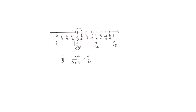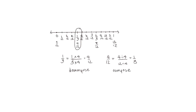Going the opposite direction, we can start with four twelfths and compose into larger units by dividing the numerator and the denominator by four, and we're back to one third. So we can decompose by multiplying the numerator and denominator by the same factor, or we can compose, making larger units, by dividing the numerator and denominator by the same number.